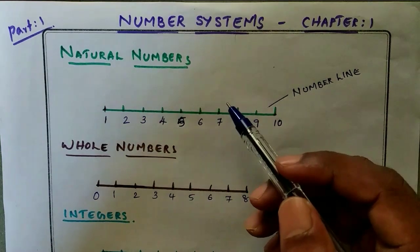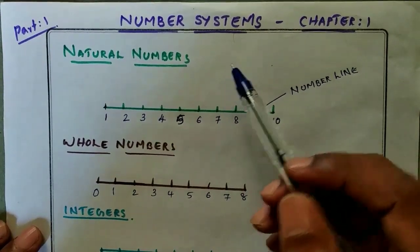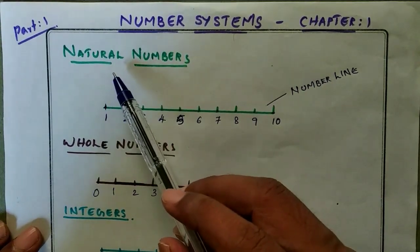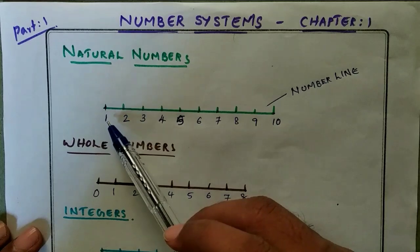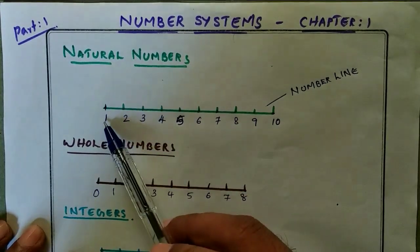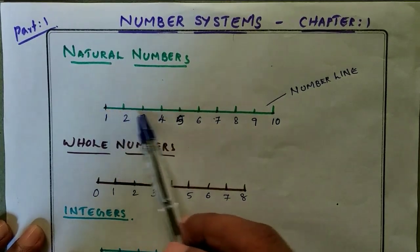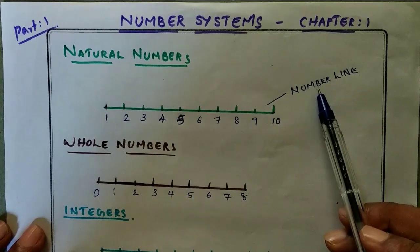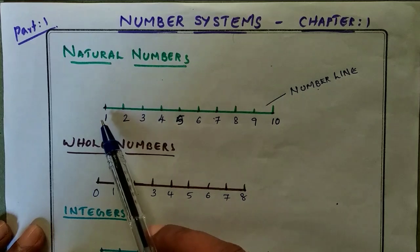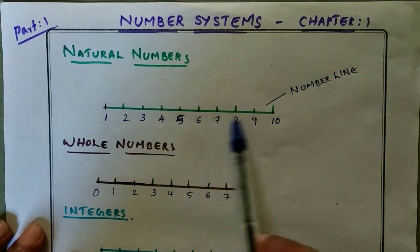Dear students, welcome to my video. This is chapter number one: Number System. We know numbers started from counting numbers, also called natural numbers, that start from one, two, three, four, five, etc. This line is called the number line. On the number line we can plot all the natural numbers — one, two, three, four — with equal spacing.